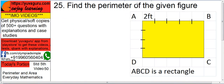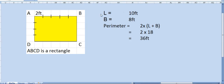Find the perimeter of the given figure. This is a rectangle with 5 sections — 4 over here and 1 here. Each section is 2 feet, so the total length comes out to be 10 feet. L equals 10 feet, B equals 8 feet.